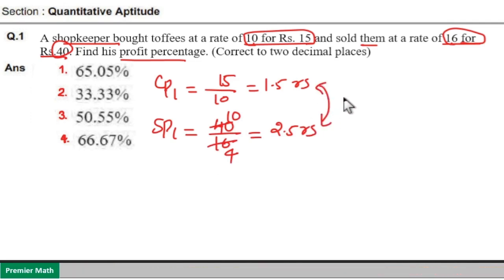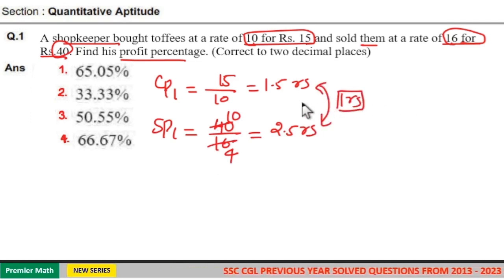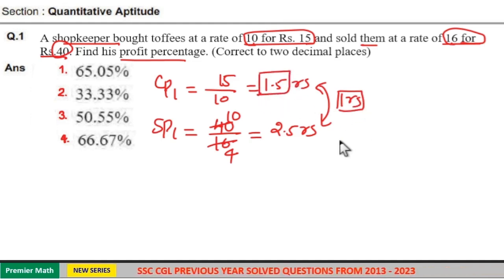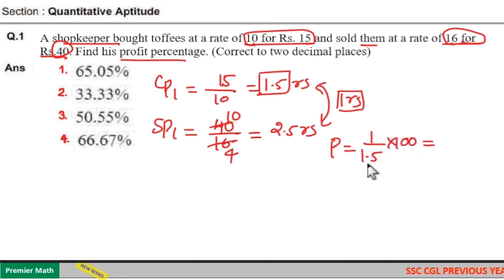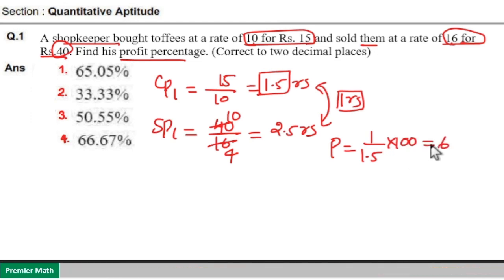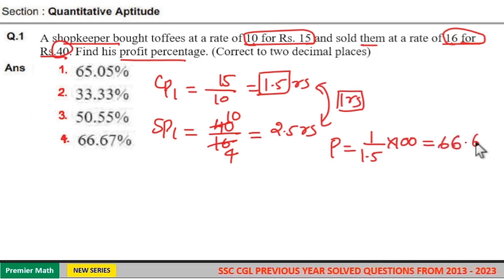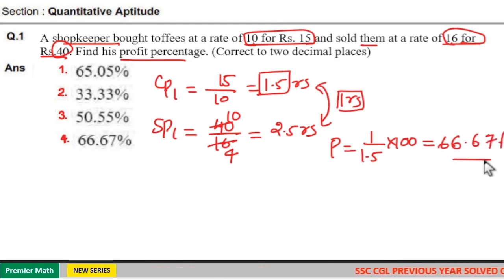The difference between sell price and cost price is 1 rupee. This 1 rupee is generated from a cost price of 1.5 rupees. So profit percentage equals 1 divided by 1.5 into 100, which is 1000 by 15. That is 66.66, which equals 66.67%. Option 4 is your answer.